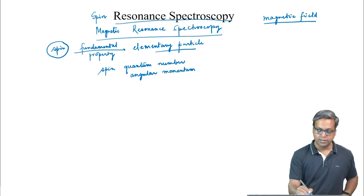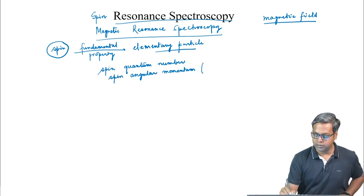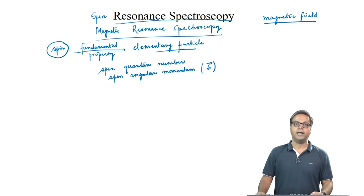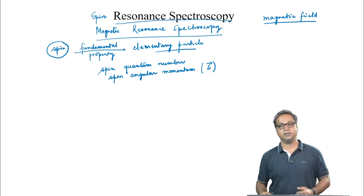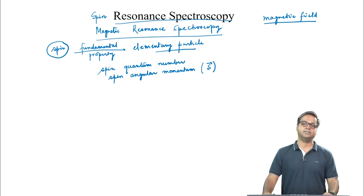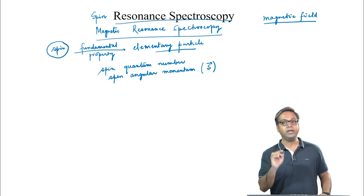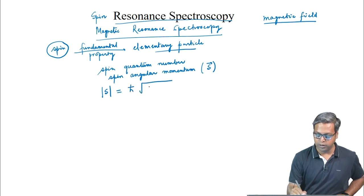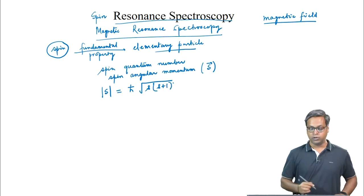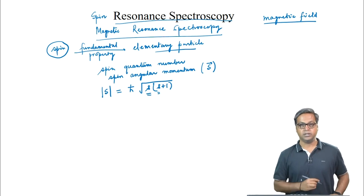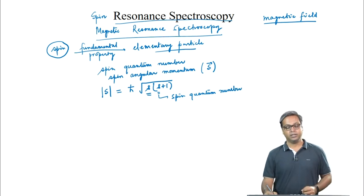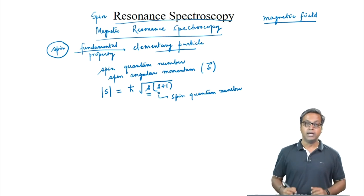The spin angular momentum is represented by capital S, and the spin angular momentum is a vector. This spin angular momentum arises from the rotation of electrons around their axis, and the magnitude of this spin angular momentum, given by |S|, is h-cross times root over S(S+1). Here, small s represents the spin quantum number, meaning the spin angular momentum is quantized.